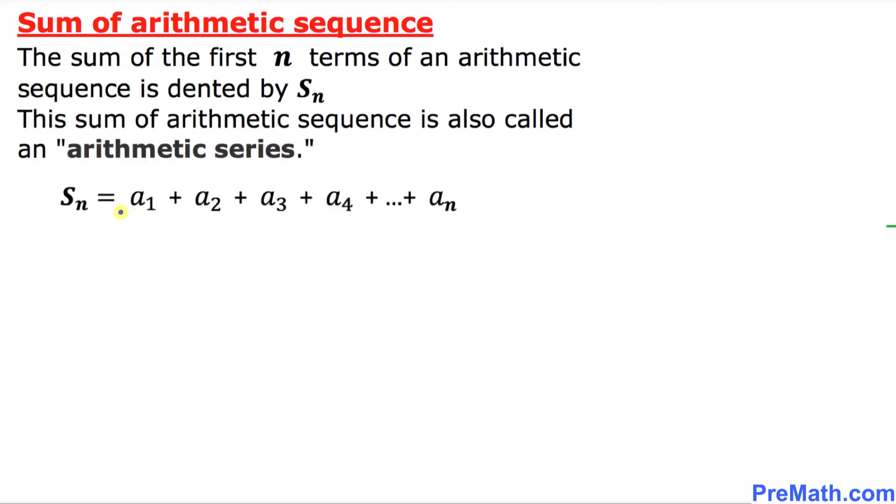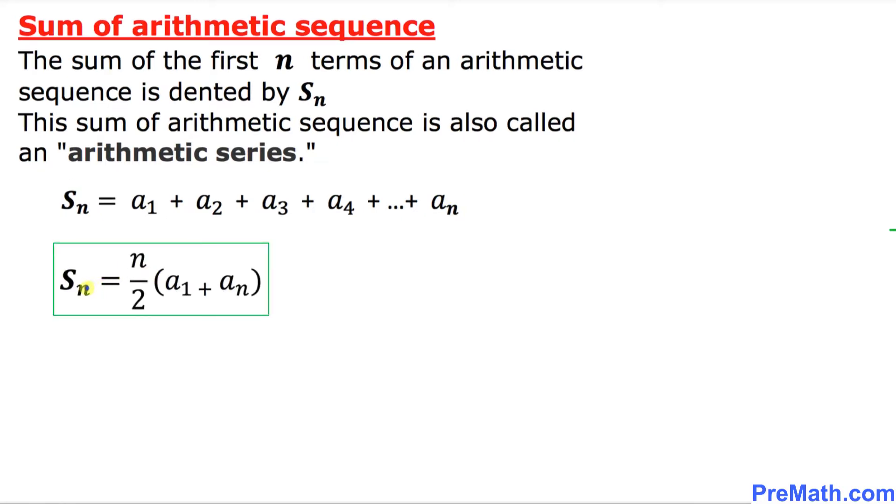Let's start off with S of n means sum of the first n terms. S of n means the first term plus the second term plus all the way to the nth term. Then the sum formula, this is the formula: S of n equals n over 2, means number of terms divided by 2, times a sub 1 plus a sub n.